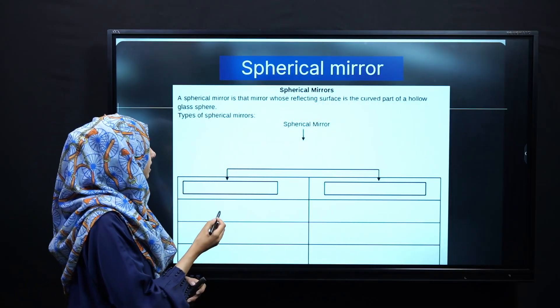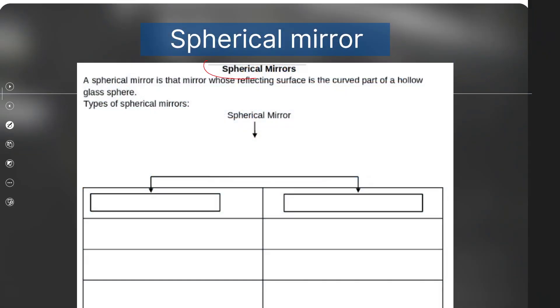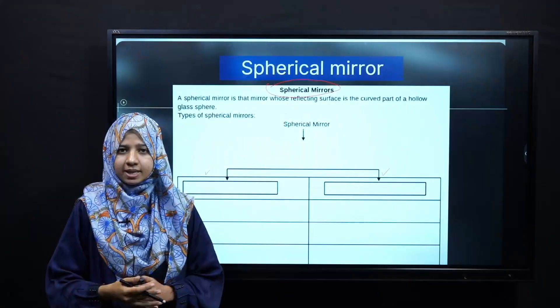Very good. Let's move towards another one. Is activity ko solve karne ke liye aapko yaha per sabse pehle spherical mirrors ki types ko mention karna hai, uske baad aap unki teen characteristics ko yaha per likhenge. Jaldi se apne video ko pause kijiye aur is activity ko solve kariye.